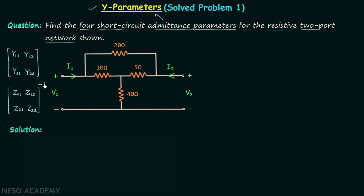The inverse of the impedance matrix will be equal to the admittance matrix. I have already explained how to calculate z11, z12, z21, and z22, so pause the video and try to solve the question on your own. I hope you tried solving it — now I will provide the solution.